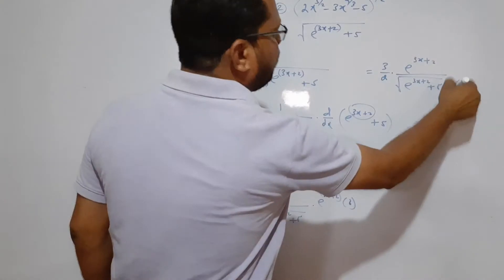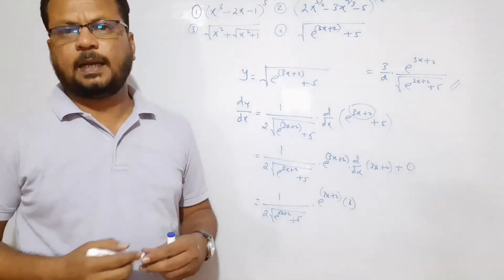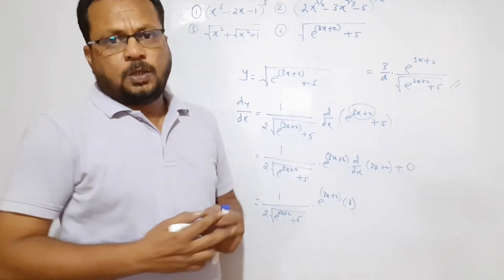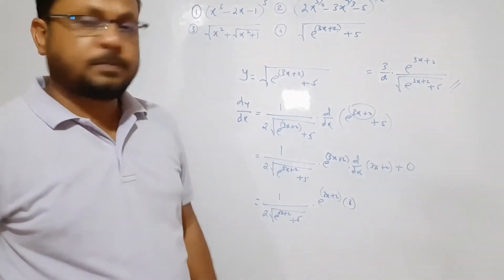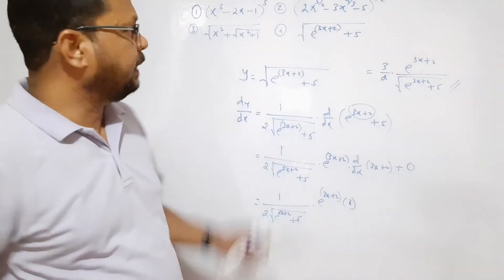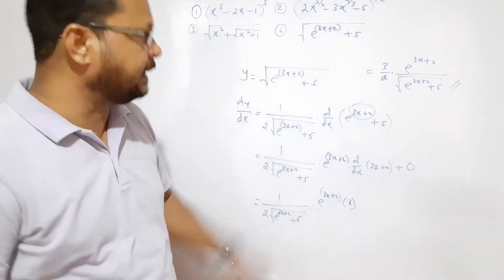This is how you complete example 4, treating it as a composite function with a square root outer layer and an exponential inner function. Following this systematic approach, step by step, we can solve two-layer and three-layer composite function examples.